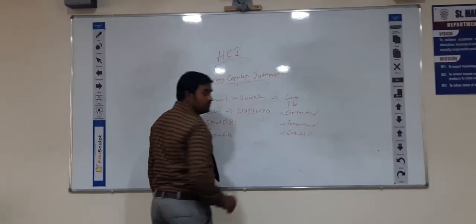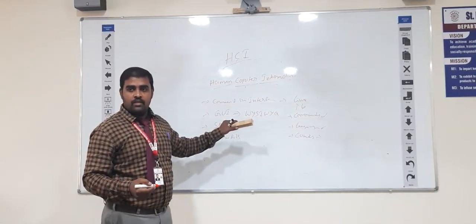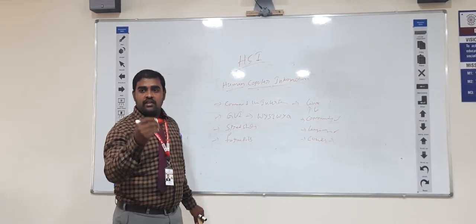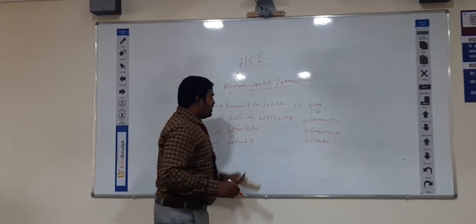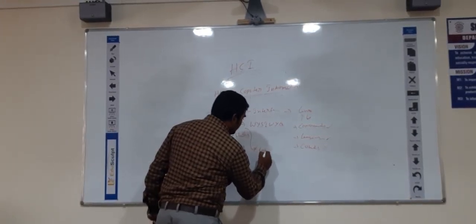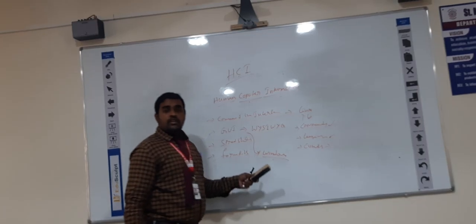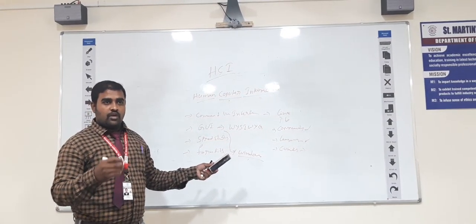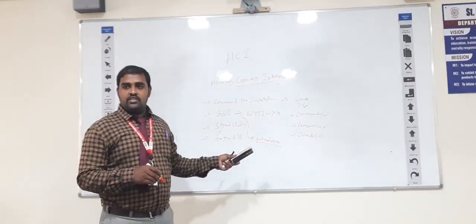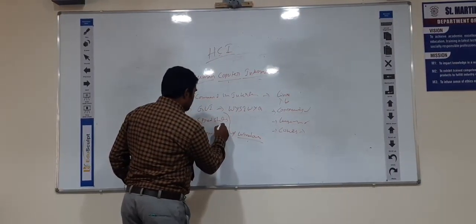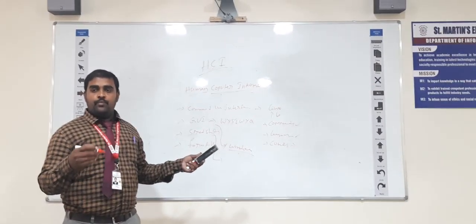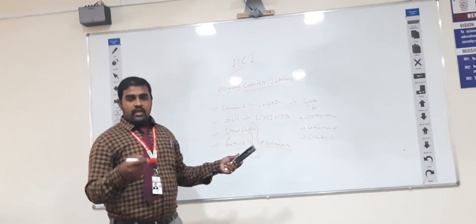Second one is the graphical user interface. You can also call it as WYSIWYG — What You See Is What You Get. By directly clicking on what you are seeing, your output is exactly what you get. The best example is the Windows operating system. In Windows, even people with basic knowledge can interact with the operating system.